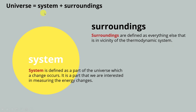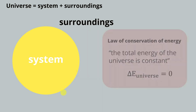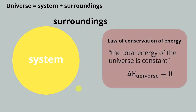System plus surroundings make up the universe, in thermodynamic terms. What we are very interested in is the system. The law of conservation of energy states that the total energy of the universe is constant. We can express this as a mathematical equation: delta E subscript universe equals zero, meaning the energy is constant and the change of energy is zero.